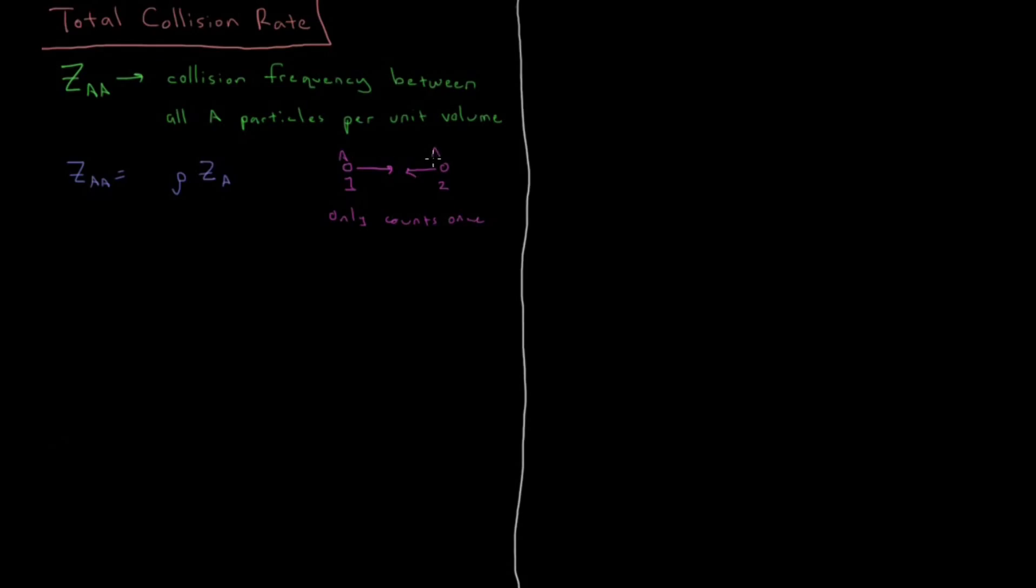So these are both A particles. And this is a situation called double counting. In order to avoid double counting, it's pretty simple when we just have one type of particle. We just include a factor of one half so that it only counts once for each particle.